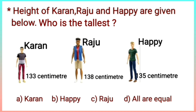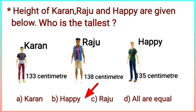Is it option A, Karan? No, because the height of Karan is 133 centimetres. Is it option B, Happy? No, because the height of Happy is 135 centimetres. Option C is 138 centimetres, which is the greatest. So our correct option is option C, that is Raju.